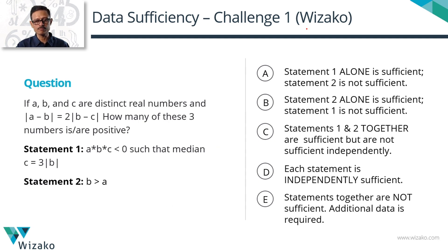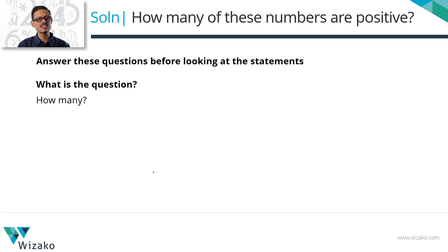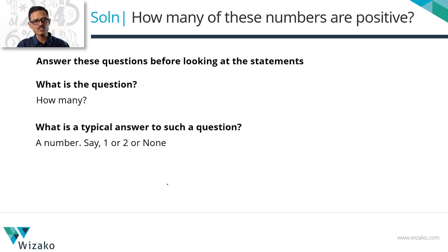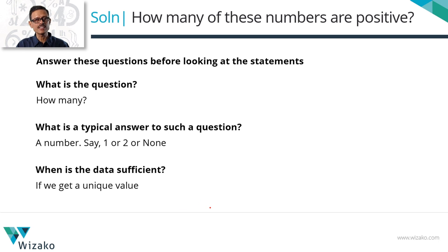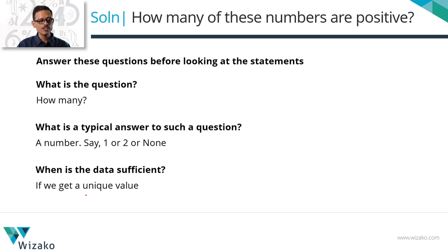Now let's evaluate the statements. The question asks: how many of these numbers are positive? The answer will be 0, 1, 2, or 3. Data is sufficient only if we get a unique value. The first set of statements is presented by Wizako. Statement 1 says: product of ABC is negative, such that median C equals 3 times modulus of B. Statement 2 says: B is greater than A.